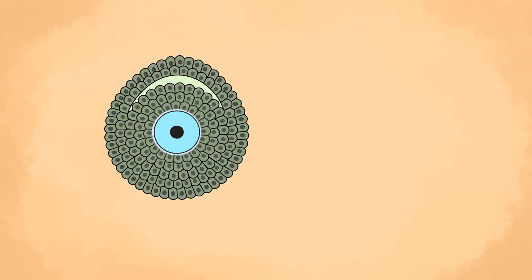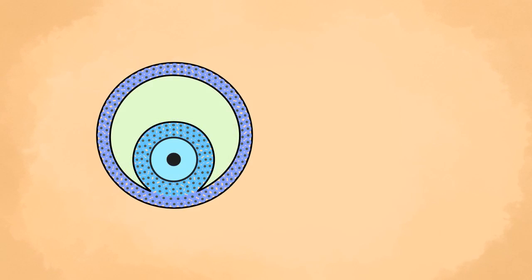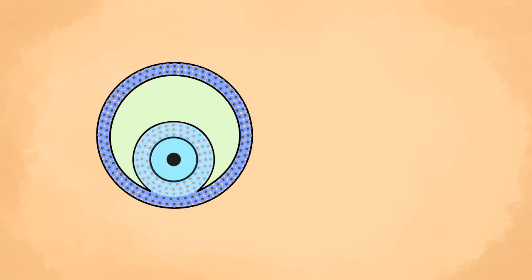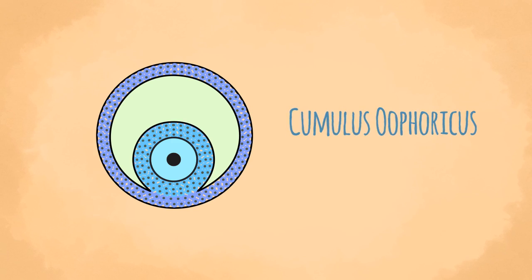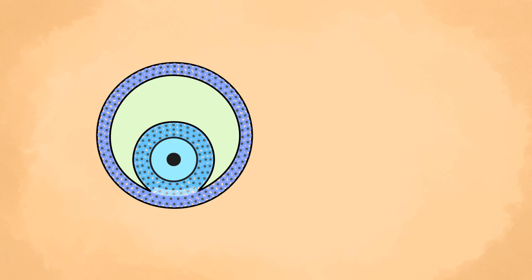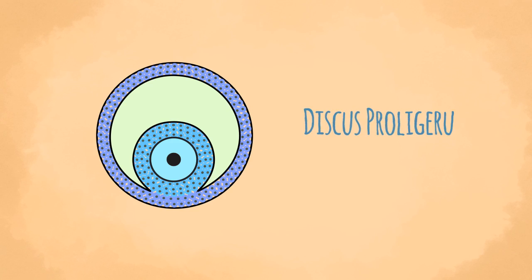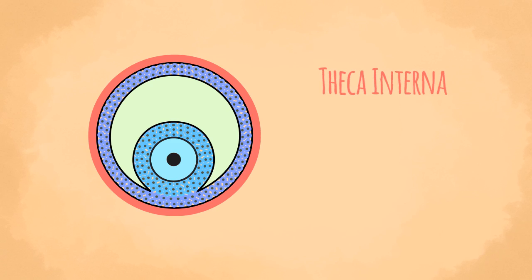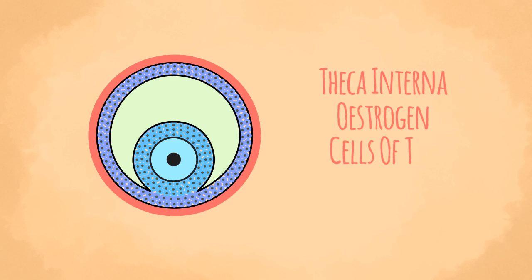The cavity of the follicle rapidly increases in size, and as a result the wall of the follicle becomes relatively thin. The oocyte now lies eccentrically in the follicle, surrounded by some granulosa cells called the cumulus oophorus. The cells that attach it to the wall of the follicle are called the discus proligerus. As the follicle expands, stromal cells surrounding the membrana granulosa become condensed to form a covering called the theca interna.